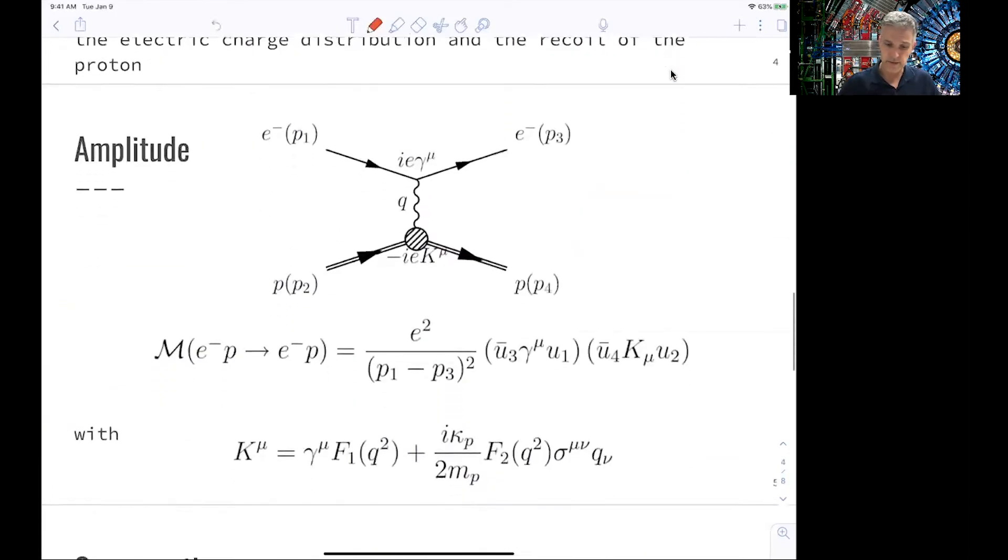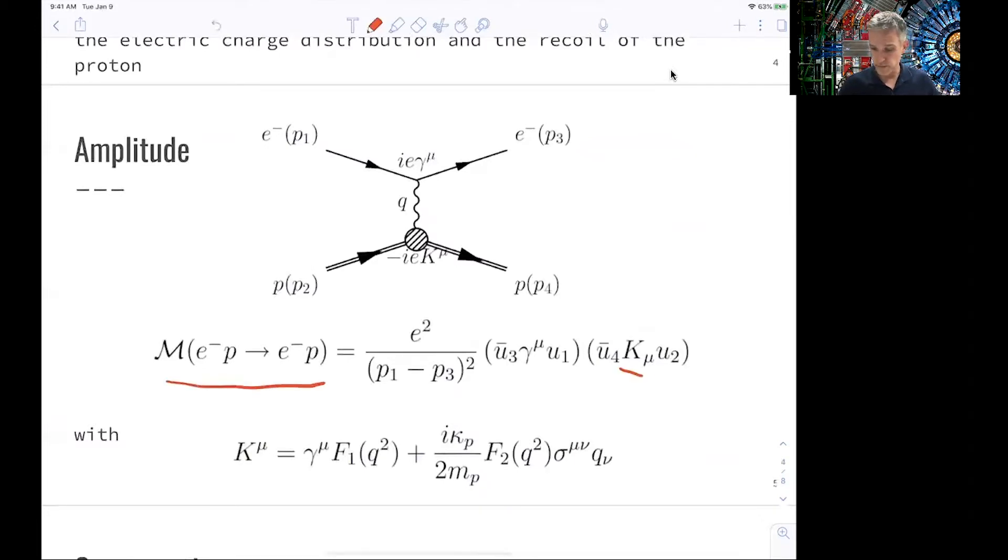Let's have a look at the amplitude. We can start from where we left off with electron-positron scattering or electron-muon scattering and write down our matrix elements for the proton. What we do here is modify the vertex of the proton, and the modification is parametrized in those two factors, describing the cross-section or the matrix element amplitude with two form factors.